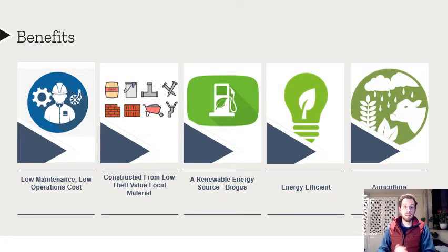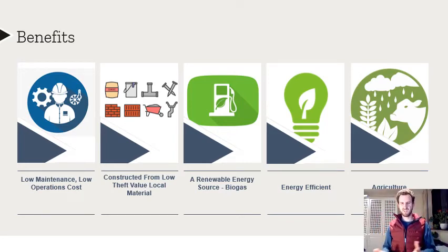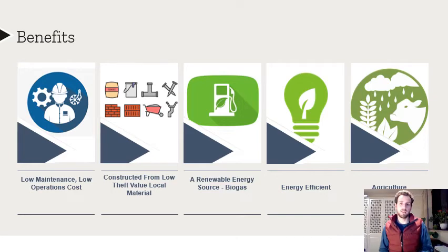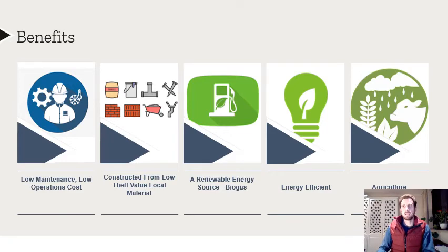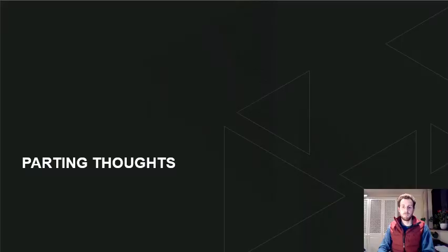The benefits of decentralized systems include low maintenance and low operational costs. Construction materials are generally readily available and local, and there's less attraction for theft since they're basic materials like bricks, mortar, and stone. You can generate energy — the first settling steps typically become anaerobic and generate methane gas you can harvest for cooking, as many decentralized systems in Africa, particularly Ghana, do. There are no major energy inputs, it's more energy efficient, and the water that comes out is of reasonable quality and could be used for agriculture.